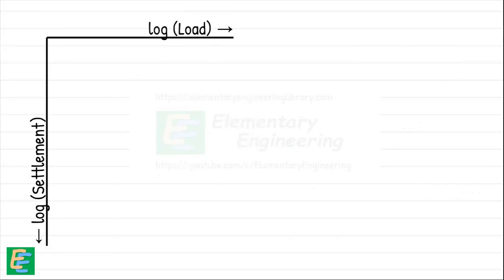On this scale, the data often forms two straight lines, and where these lines intersect is considered the failure point for the soil.